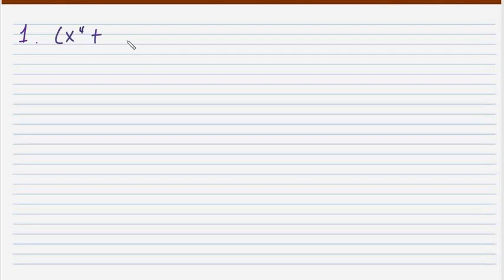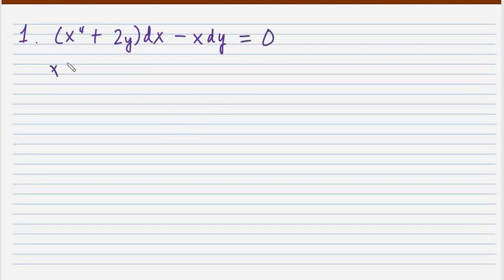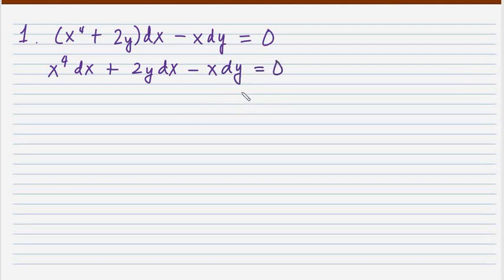Let's say our differential equation is — let's have some examples. We have x to the 4th plus 2y dx minus x dy is equal to 0. Distributing dx, we get x to the 4th dx plus 2y dx minus x dy is equal to 0.